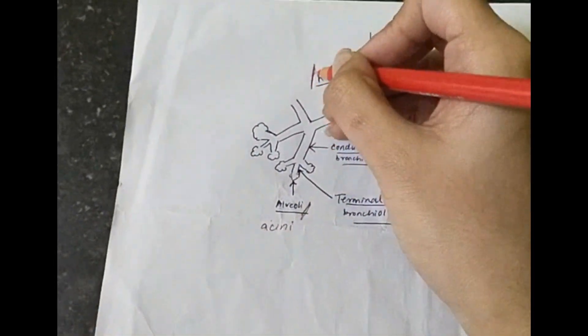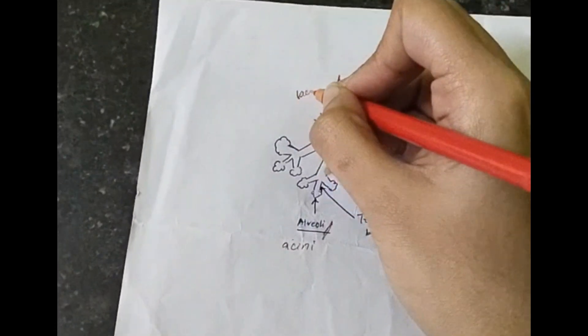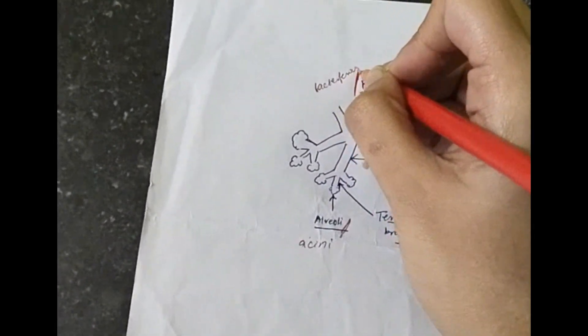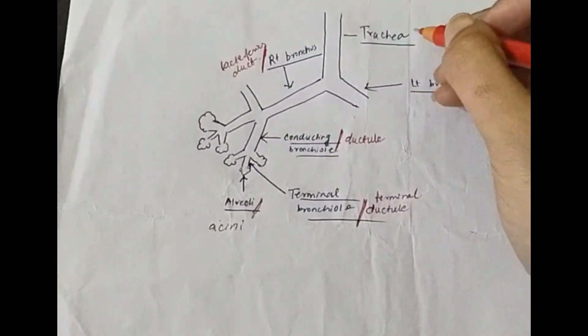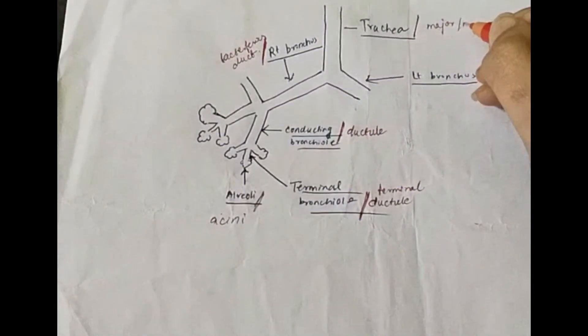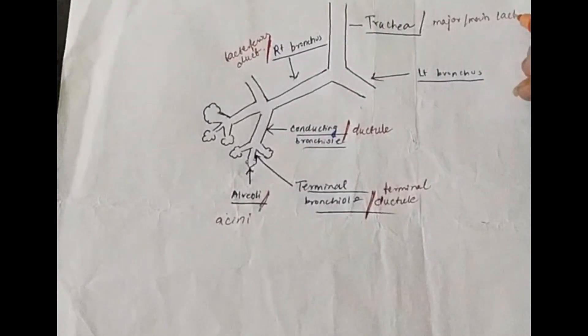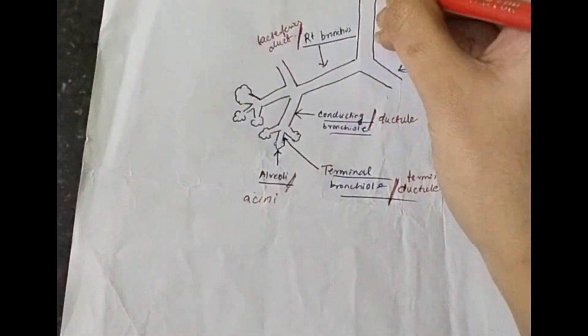In place of the bronchus you have the lactiferous duct. And in place of trachea you have the major or the main lactiferous duct. And this main or the major lactiferous duct opens into nipple.